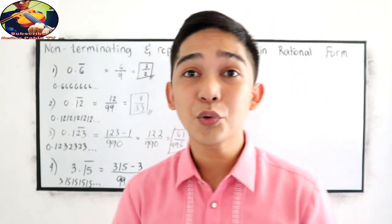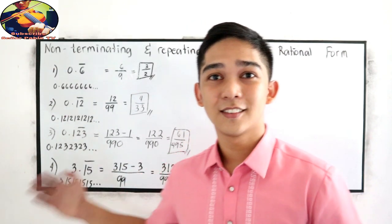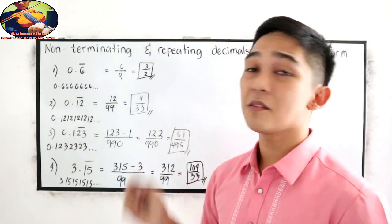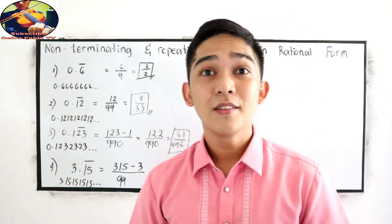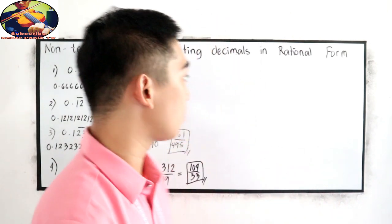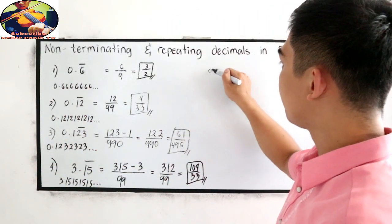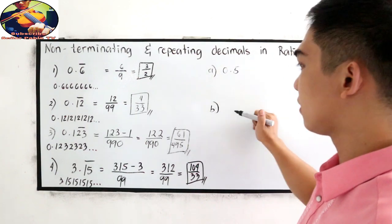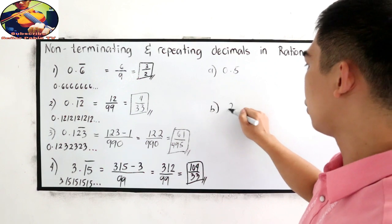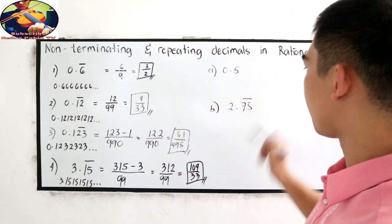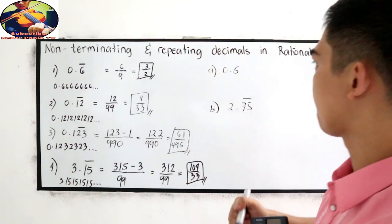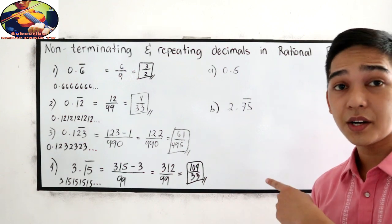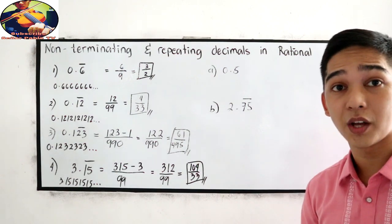That is how to write non-terminating and repeating decimals into rational numbers. Now I want you to answer the following: Letter A is 0.5 bar. Letter B is 2.75 with a bar on top. Post your answer, then resume watching when you are done.